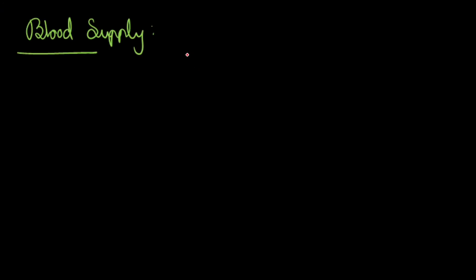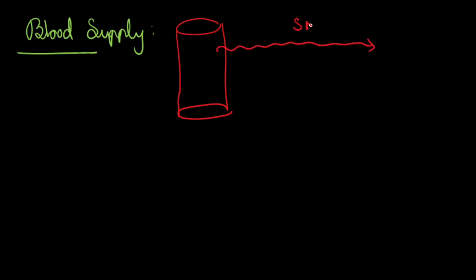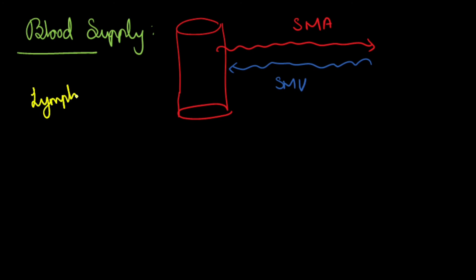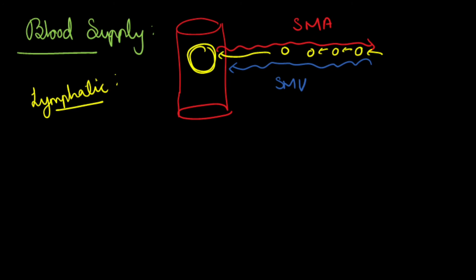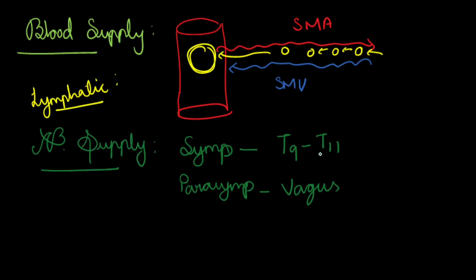Regarding the blood supply of jejunum and ileum: the superior mesenteric artery, which is a branch of the abdominal aorta, forms the major blood supply. Venous drainage is through the superior mesenteric vein. For lymphatic drainage, lymph nodes present along the superior mesenteric artery receive all the loops and drain directly into the lymph nodes in front of the abdominal aorta. Regarding nerve supply: sympathetic supply is through T9 and T11, and parasympathetic is through the vagus.